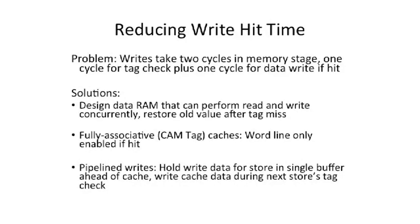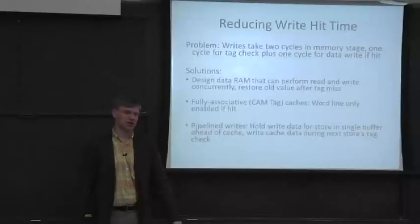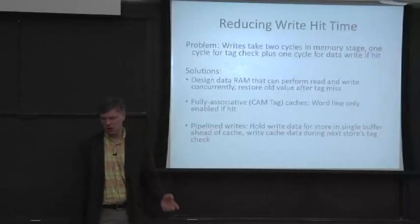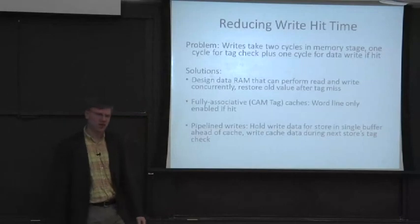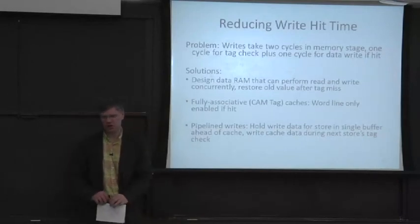So the first optimization — how do we reduce the hit time for a write? There are a couple of different strategies. We can think of this as trying to do this over two different cycles: the first cycle checks the tag, and the second cycle does something to the data. That's kind of our problem statement. What are our solutions?